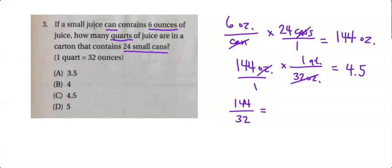You could even say well, I know 8 goes into this so that makes this 4. 8 goes into this which makes it 18. And then 18 over 4 is just 9 over 2, 4.5. C is the answer.